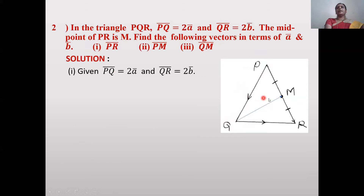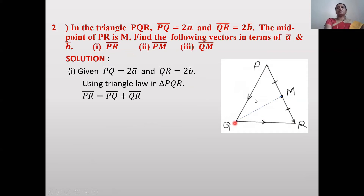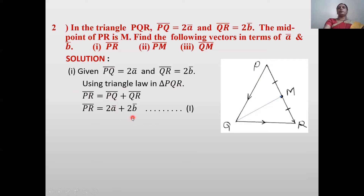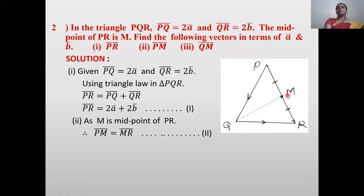M is the midpoint of PR. To find PR̄: by the triangle law of addition, PR̄ = PQ̄ + QR̄. Substituting the values, PR̄ = 2ā + 2b̄. Suppose this is equation 1.